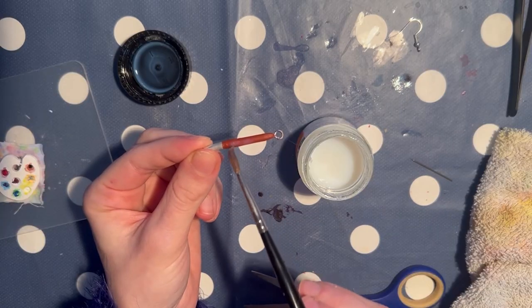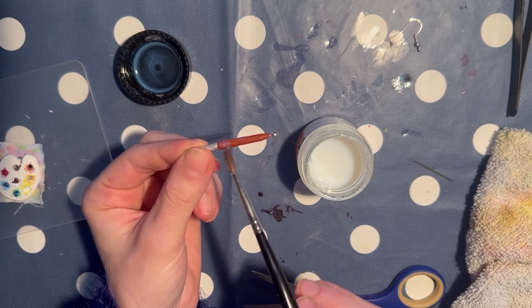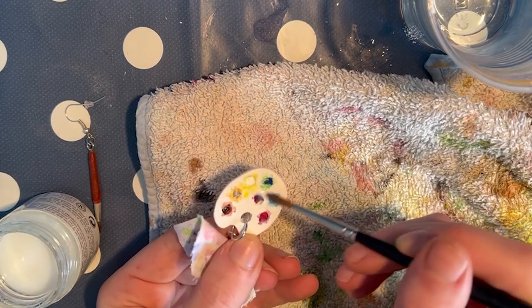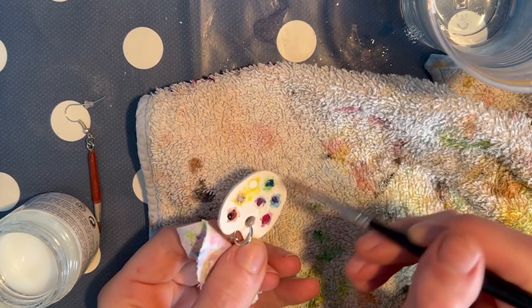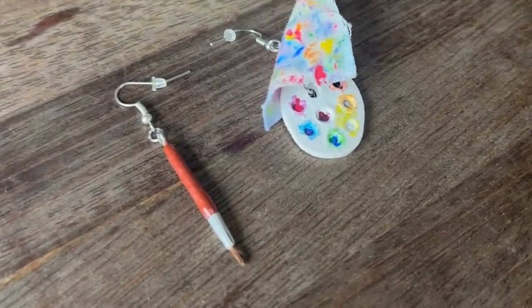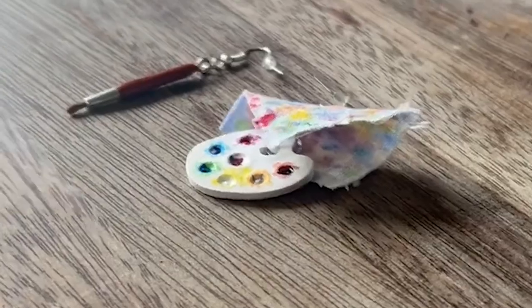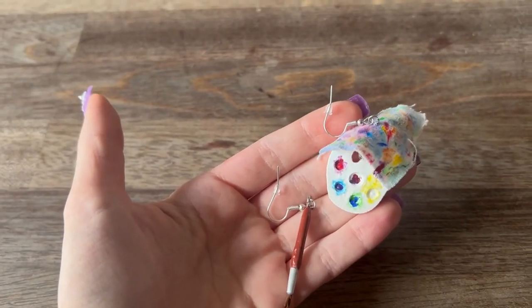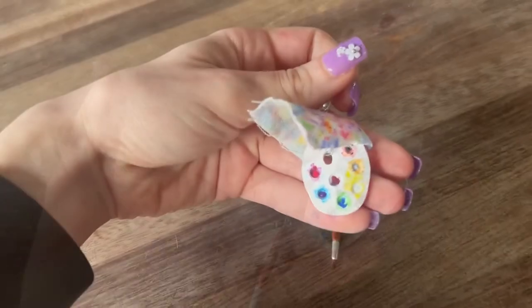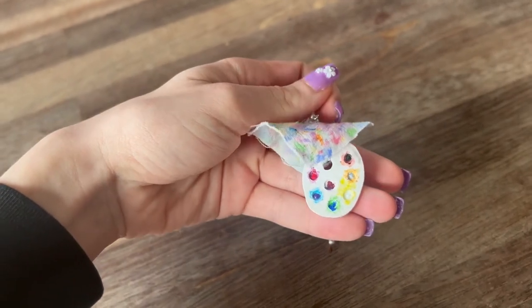Finally, a good coat of gloss varnish. As you might be able to see, I also added more color to the palette after some feedback I got from other people. After the gloss varnish and earring hooks, they're all done.